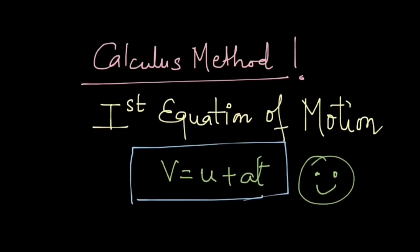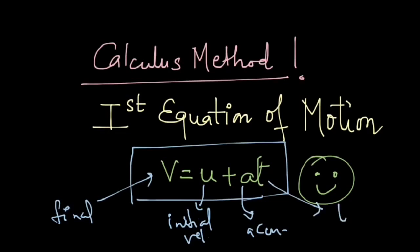But let us talk about the variables a little first. Here v stands for the final velocity, u is the initial velocity, a is the acceleration of the particle, and t is the time.